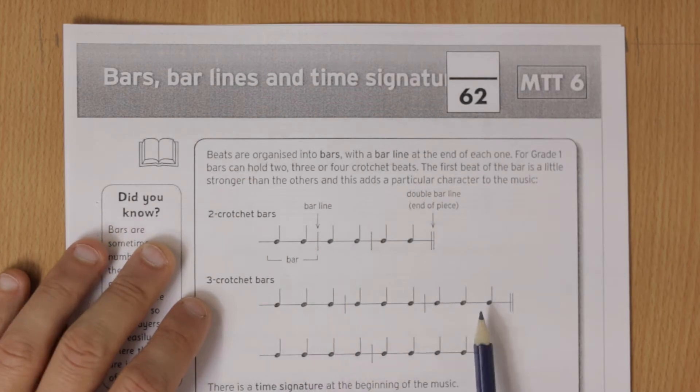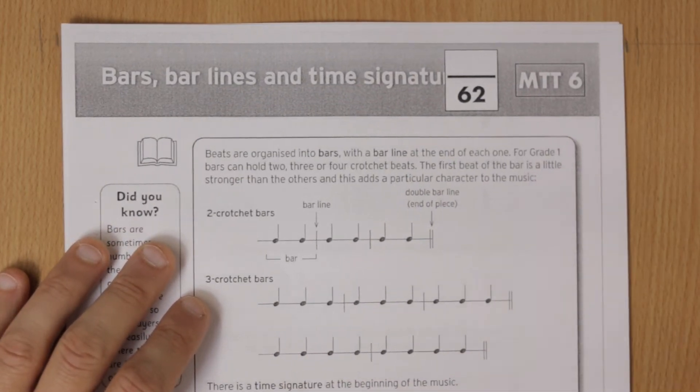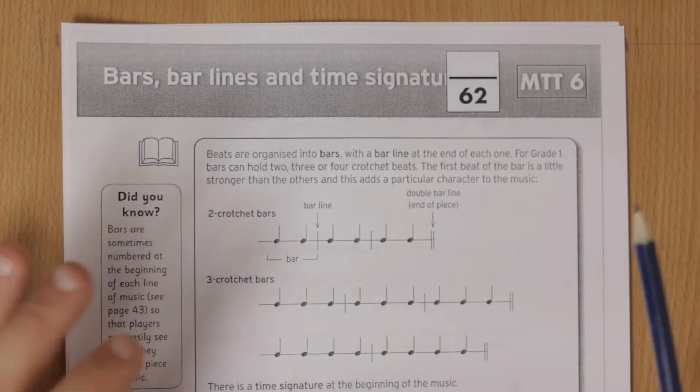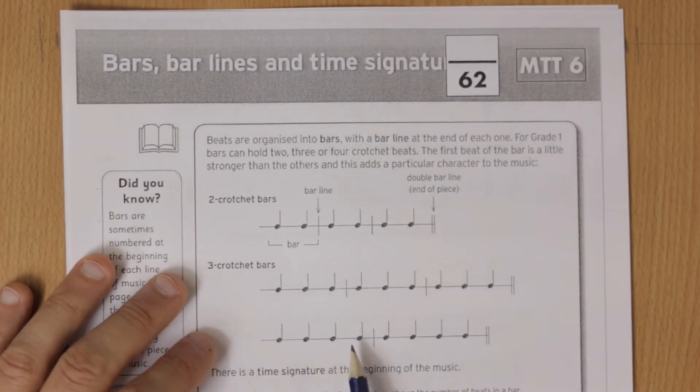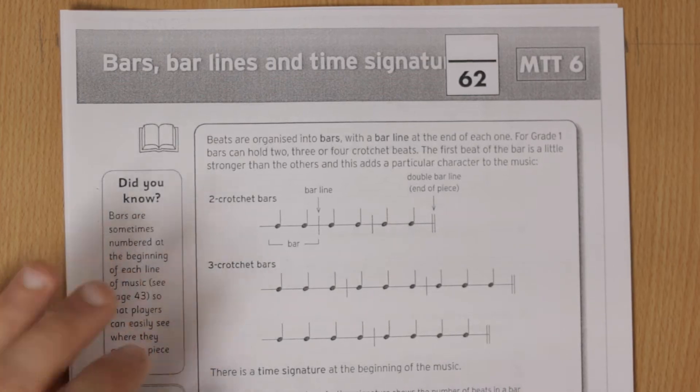This has got three crotchet beats, so it's one-two-three, one-two-three, one-two-three. So it has a different feel. And this is one-two-three-four, one-two-three-four, one-two-three-four, so feels different again.